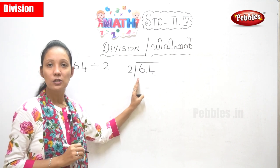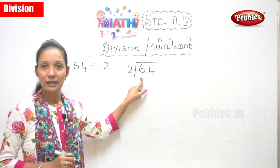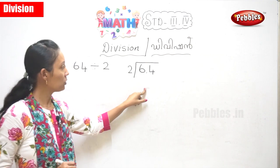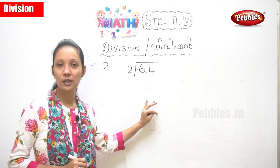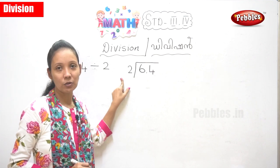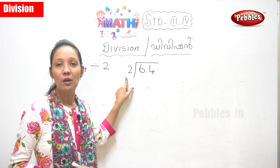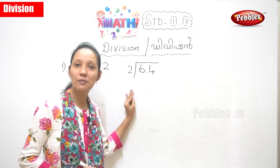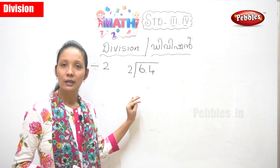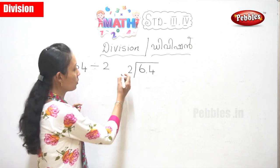It is 64, so first what you have to do is divide the number on your left. You have to divide 6 by 2. To do your division you need to be thorough with your tables. Your number is 2, so look at your two times table — two into what do you get 6? How many times does 2 go into 6?